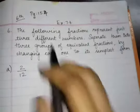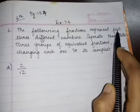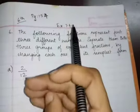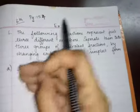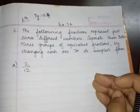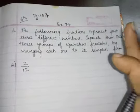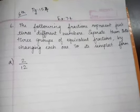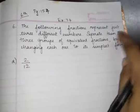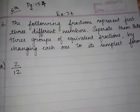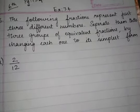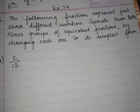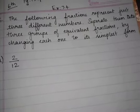What is the 6th problem? The following fractions represent just 3 different numbers. From A to L, fractions are given — many fractions are given in the textbook. Everything represents the same numbers; they are actually something in common, something the same. We are going to separate them into 3 groups of equivalent fractions by changing each one to its simplest form. If they all have the same simplest form, we can group them easily. So we have to find their simplest form.